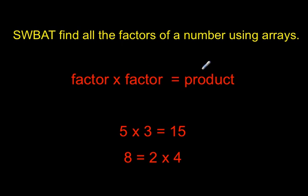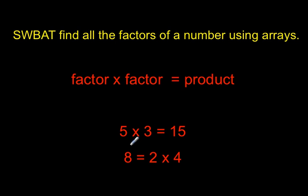You're going to be finding factors of numbers in this lesson. For a couple of examples: 5 times 3 equals 15 — 5 and 3 are factors of 15 because when you multiply them together, they make 15. Similarly, 8 is equal to 2 times 4. 2 and 4 are factors of 8 because when you multiply them, you get the product 8.